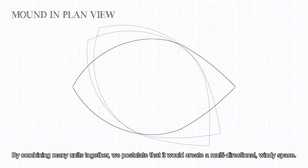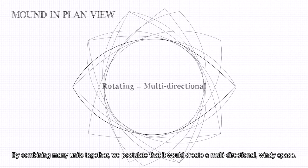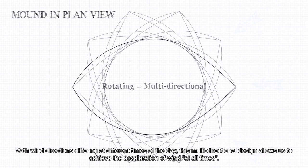By combining many units together, we postulate that it would create a multidirectional, windy space. With wind directions differing at different times of the day, this multidirectional design allows us to achieve the acceleration of wind at all times.